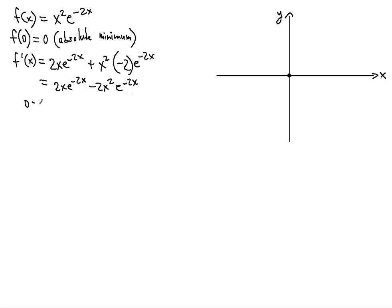Setting this derivative equal to 0 will help us find the critical numbers. We can factor this — we take out 2x · e^(−2x), which gives us 2x · e^(−2x) times (1 − x). That's how we factor those two terms.